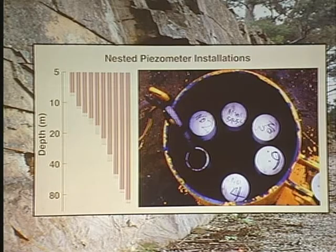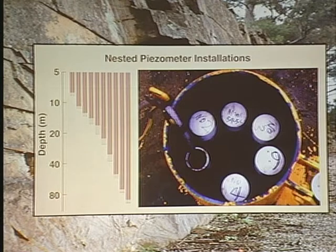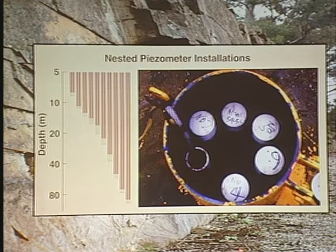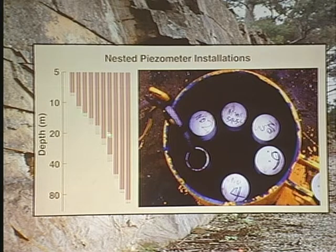What we did is we dug some large diameter 10 inch and 12 inch wells down to 100 metres, and within that we installed a number of 50 millimetre PVC piezometers so we could collect water from different depths. We had two of these side by side, so we were able to sample the aquifer from near the water table down to approximately 100 metres depth and look at how the age of the water changed with depth.